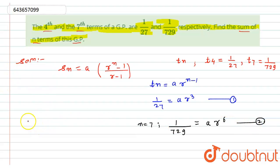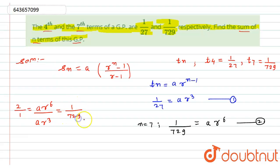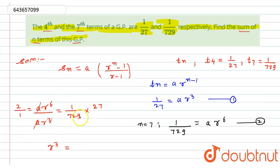Now dividing equation 2 by equation 1: (a·r^6) / (a·r^3) = (1/729) / (1/27). The a's cancel and r^3 cancels, giving r^3 = 27/729. Since 729 = 27², this simplifies to r^3 = 1/27. Therefore, r = 1/3, since 27 is the cube of 3.